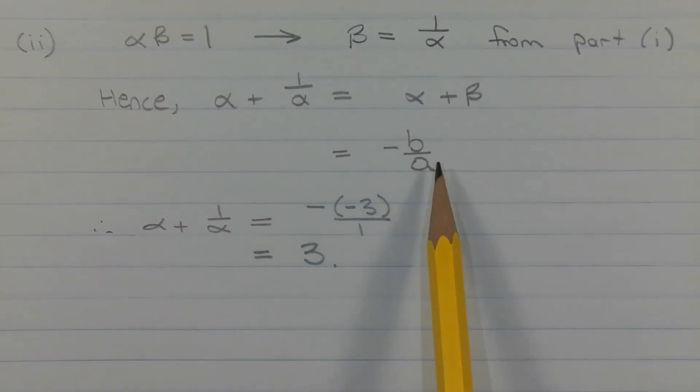So negative b over a is equal to negative negative 3 over 1, which evaluates to 3. Therefore, alpha plus 1 over alpha is equal to 3.